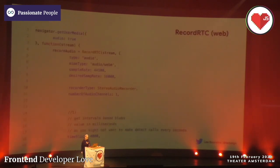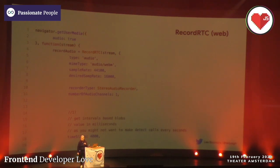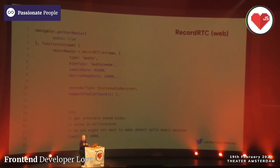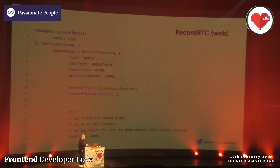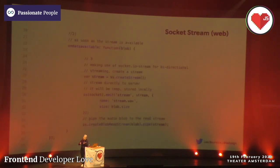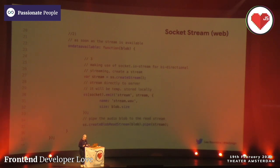Here you see the code for that. I'm using getUserMedia to get the audio stream from the microphone. What's important is that the sample rate from the browser is 44.1 kHz, but I'm bringing it back to 16 kHz to keep the size of the stream as small as possible so it streams quickly to the back end. You can also see the stereo audio recorder where I set it to one channel because it's mono audio that the speech-to-text plugin on the back end requires.